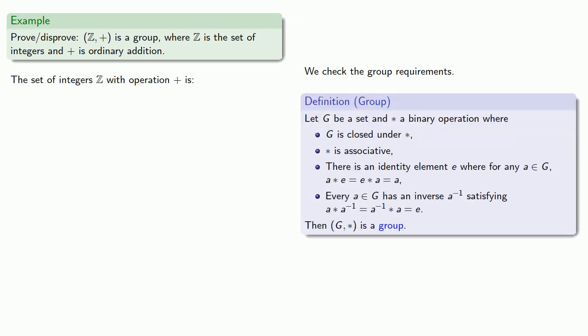The set of integers Z with operation plus is, well, let's see, is it closed? Well, if P and Q are integers, then P plus Q is an integer. So G is closed under plus.